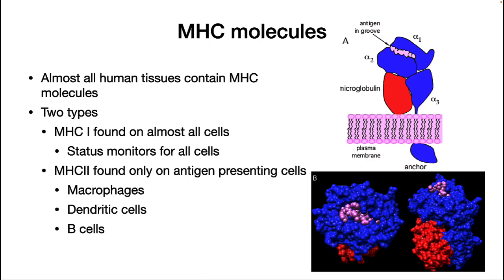Almost all human cells have MHC molecules. There are two types. MHC1 is found on almost all cells and serves as a status monitor for the cell. MHC2 molecules are found only on antigen-presenting cells — macrophages, dendritic cells, and B cells for the most part. At the right is a cartoon and a space-filling model of an MHC molecule. The purple peptide is the antigen tucked in a groove of the MHC molecule. The TCR interacts with that groove, and if it fits with the antigen, the T cell activates.